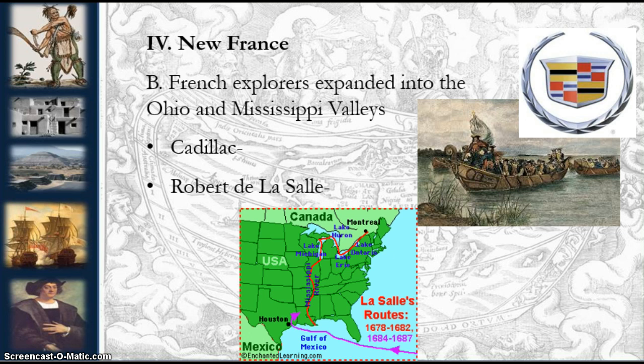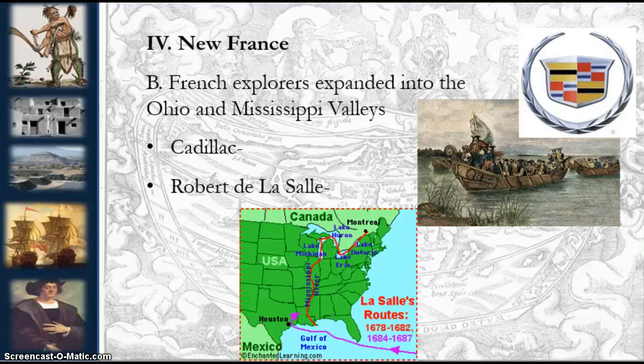The French established posts in the Mississippi region. New Orleans was in fact the most important, founded in 1718. They attempted to block Spanish expansion into the Gulf of Mexico and established forts and trading posts in Illinois country — Kaskaskia, Cahokia, and Vincennes. Large amounts of grain were sent down the Mississippi River for shipment to the West Indies and back to Europe.